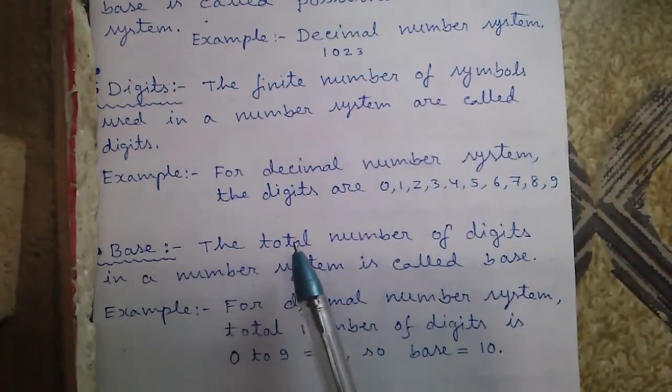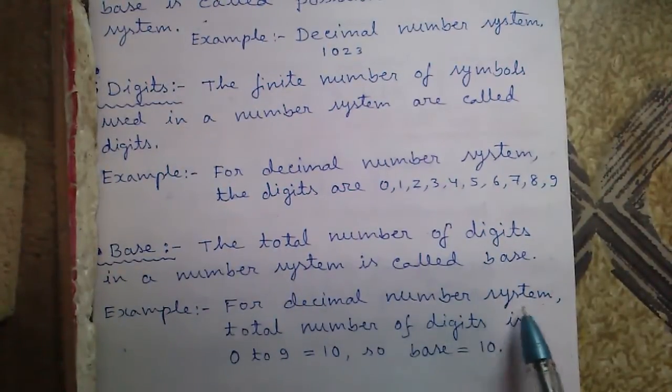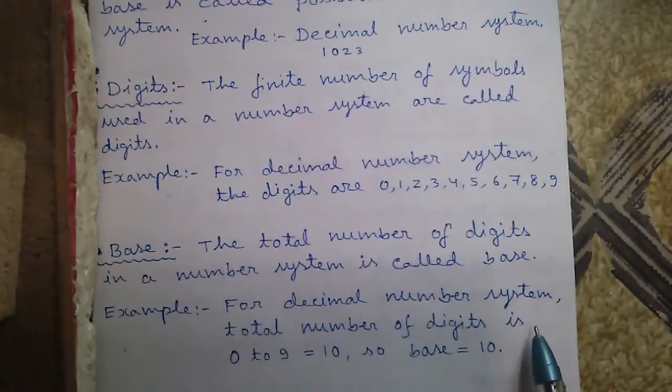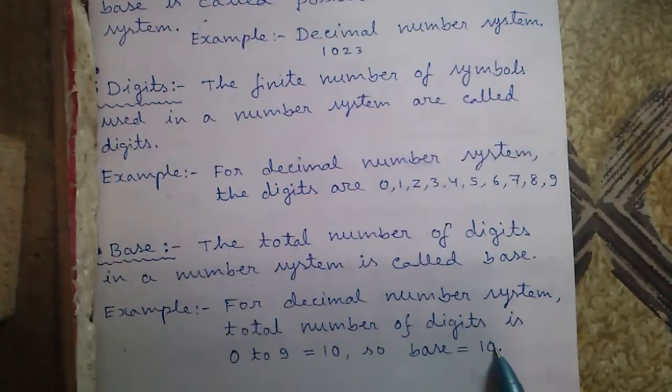And base. The total number of digits in a number system is called base. For example, for decimal number system, the total number of digits is 0 to 9, that is equal to 10. So base of decimal is 10.